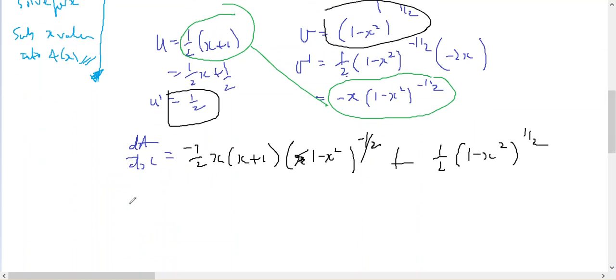I wish to set it equal to 0 and then solve for x. So I need to factorize this to use the null factor law. I can take a half out as a common factor. I can't take an x, I can't take an x plus 1, but I can take a 1 minus x squared to the negative of a half out as a common factor. So the half's gone, but the negative stays in, the x stays in, the x plus 1 stays in, but this bracket to the negative of a half goes out. Plus the half goes out, and one of these to the power of negative of a half goes out. So I'm left with 1 minus x squared on the inside.